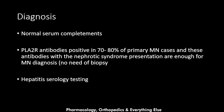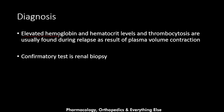In membranous nephropathy, complement levels are normal as patients are not losing complement. PLA2R antibodies are sent and are positive in 70-80% of primary membranous cases. These antibodies combined with nephrotic syndrome presentation are sufficient for diagnosis — no biopsy is needed. Hepatitis serology is checked for secondary causes. Elevated hemoglobin, hematocrit, and thrombocytosis are found during relapse due to plasma volume contraction. A renal biopsy is the confirmatory test for patients without positive autoantibodies.